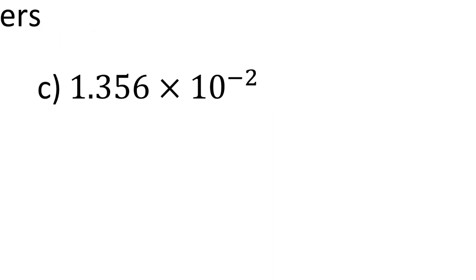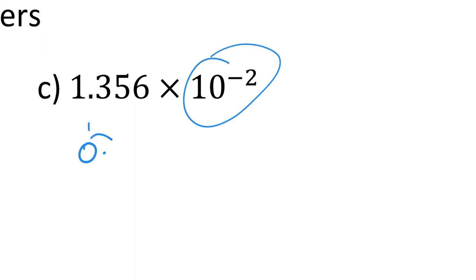This one is going to make it smaller because we have 10 to the minus 2, so this will make the number smaller. You've got 0 point — your 1 was here originally and it's moving back the way: once and twice — so 0.01356. You're thinking your 1 is in the units column and then we're moving it 2 places backwards, making it smaller.